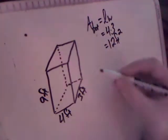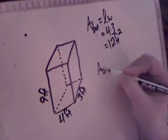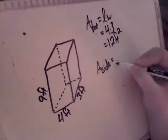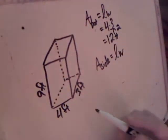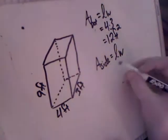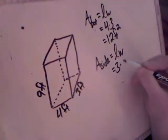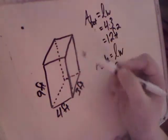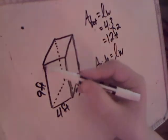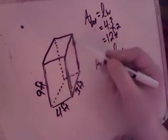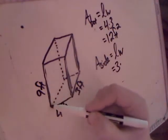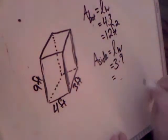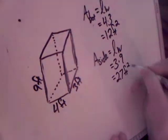Now I'm going to find the area of the side. Again, that's a rectangle, so the area is going to be length times width. The length of this side is 3. We don't have a width that's very easy to see though. What you have to remember is that this edge and the corresponding edges are all the same. So if this is 9 feet, so is this. So it's going to be 3 times 9. 3 times 9 is 27 feet squared.